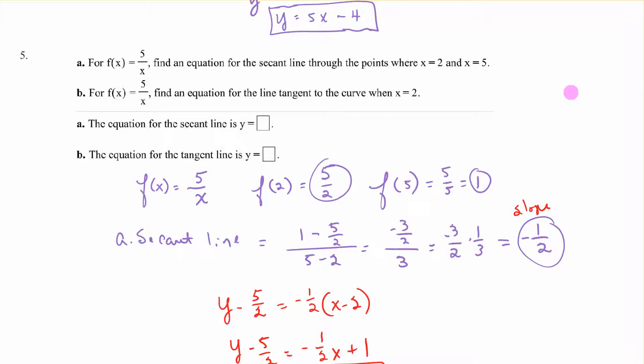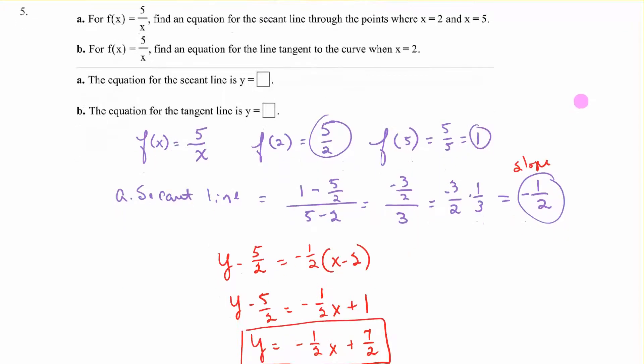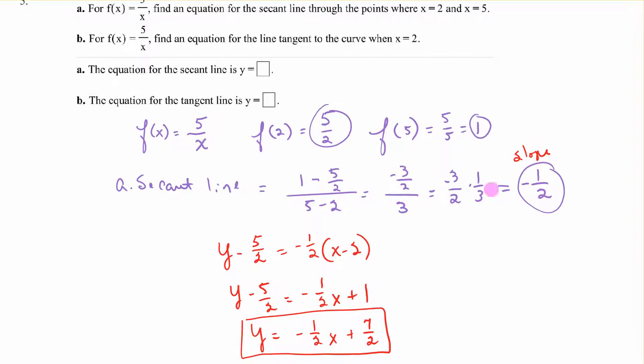Now we have a function f(x) = 5/x. If we're going to do the secant line, we need y values for these two x points. f(2) = 5/2, f(5) = 5/5 = 1. So now we have our two points. We can find the slope like before, choose one of the points, plug in, and we get our equation of the secant line.